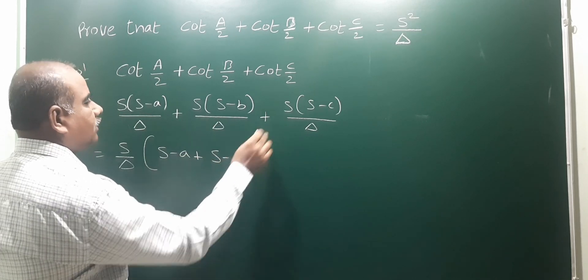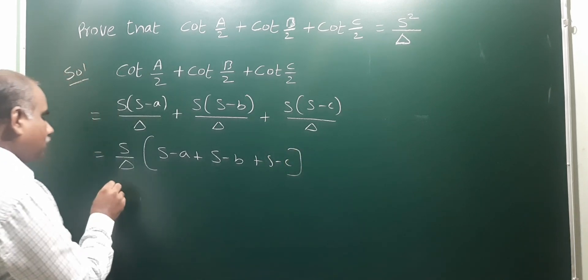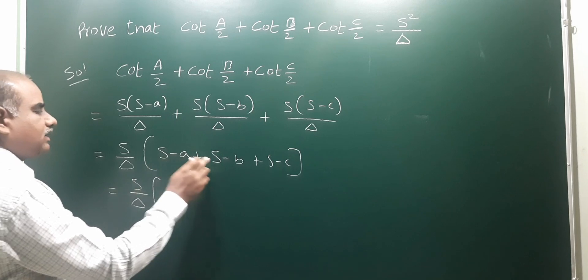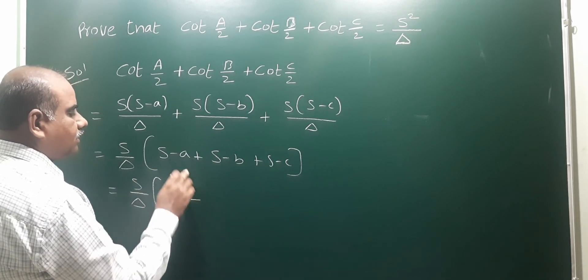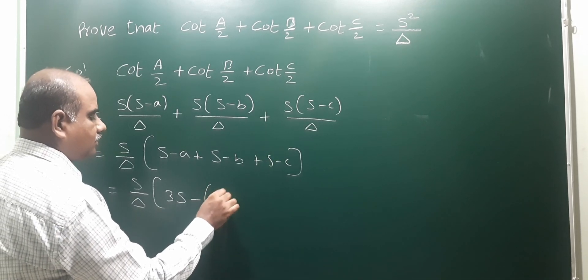That equals s/Δ times [s + s + s - a - b - c]. Three s's are there. Take minus as common: s/Δ times [3s - (a + b + c)].